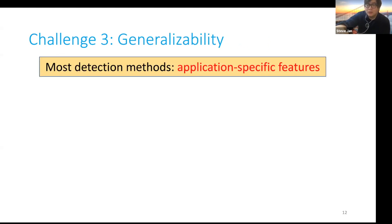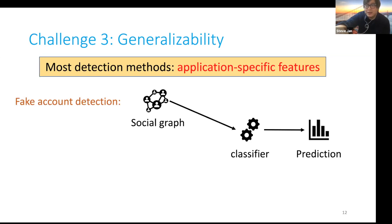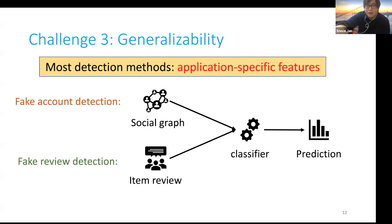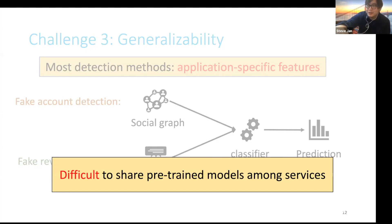Third, generalizability. Most detection methods depend on customized application-specific features. For example, for fake account detection, you may design features of the social graph. On the other hand, for fake review detection, you will design features related to customers' reviews. Such highly customized features make it hard to share pre-trained models among services.